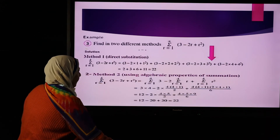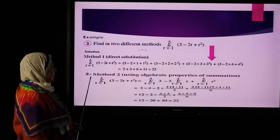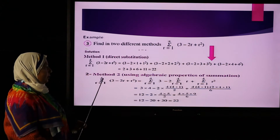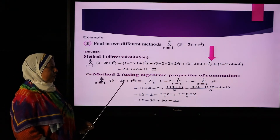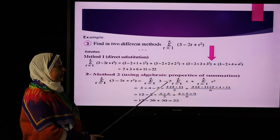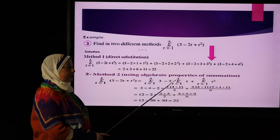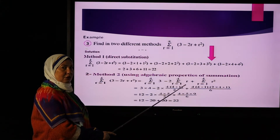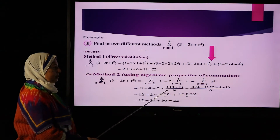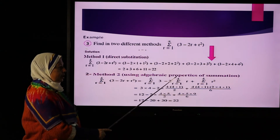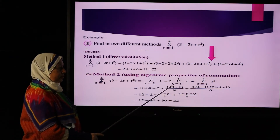Summation notation from r=1 to 4 of -2r: the constant -2 comes out, giving -2 times summation of r from r=1 to 4. With n=4: 4×(4+1)/2 = 4×5/2 = 10, so this term equals -2×10 = -20.